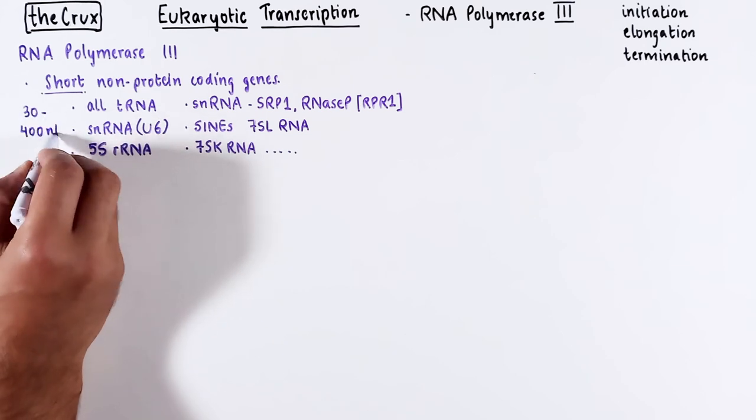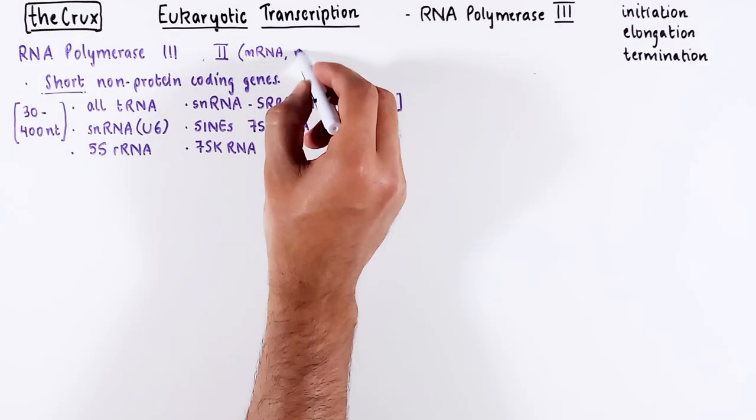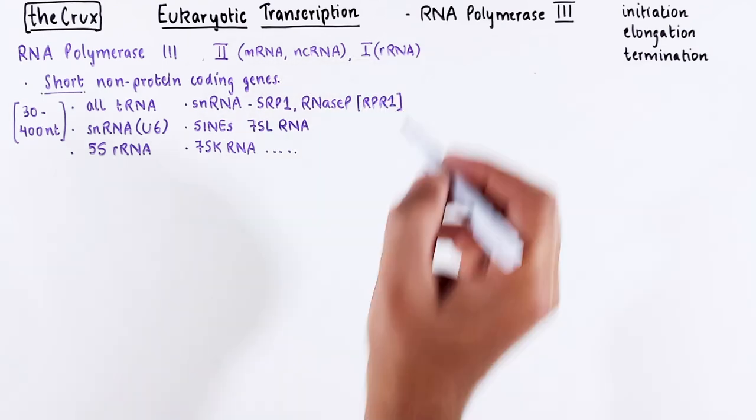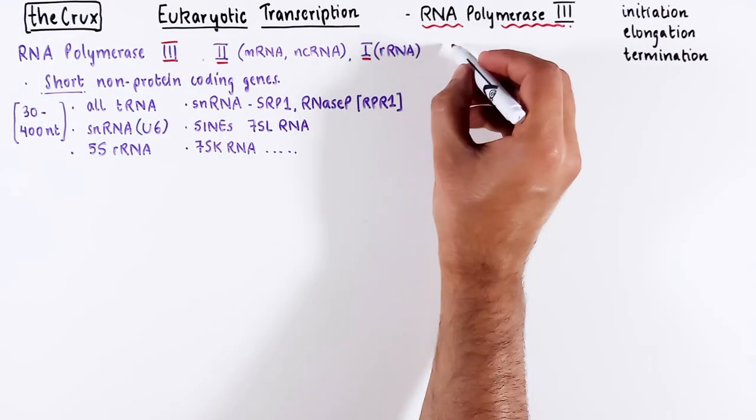This is quite different from RNA polymerase 2, which deals with longer mRNAs and non-coding RNAs, and RNA polymerase 1 responsible for transcribing a long ribosomal RNA gene. Structurally, all three polymerases are similar, with some specific subunit variations.